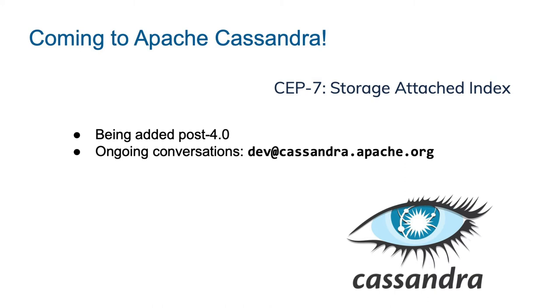Right now SAI is in Astra and in DSE (DataStax Enterprise). There is a proposal out — CEP-7, the Cassandra Enhancement Proposal — for storage attached indexes to be added post 4.0. Cassandra 4.0 is getting ready to ship soon with a code freeze, so SAI wouldn't be added to 4.0 but will be one of the first features added in 4.x or 5.x. Conversations are happening on the dev channel. You can Google 'CEP-7' and find all the documentation — gory details about how it works, and you're invited to comment.